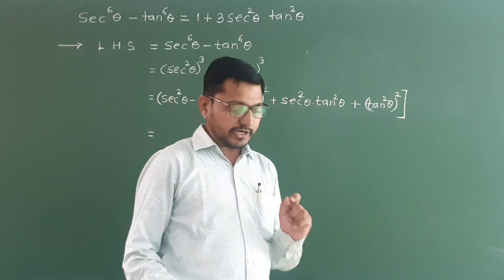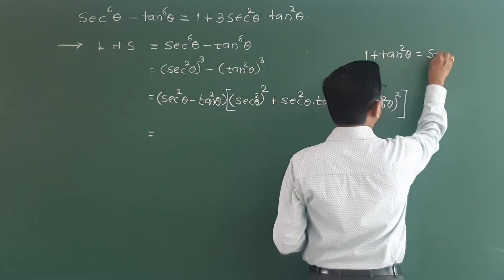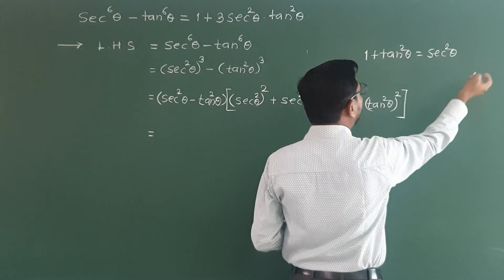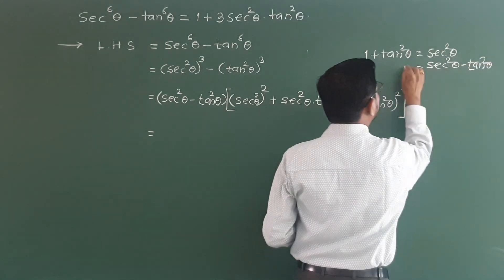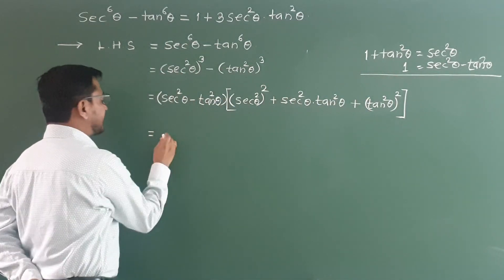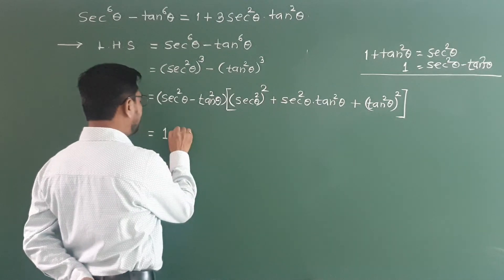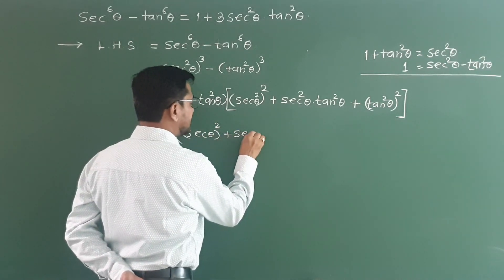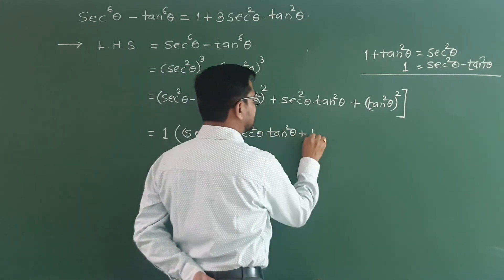Now we use the identity: 1 plus tan square theta is equal to sec square theta. So if we transfer tan square theta to LHS, we get sec square theta minus tan square theta is equal to 1. Applying this identity here, the first bracket is equal to 1, because sec square theta minus tan square theta equals 1. In the second bracket: sec square theta bracket square plus sec square theta into tan square theta plus tan square theta bracket square.